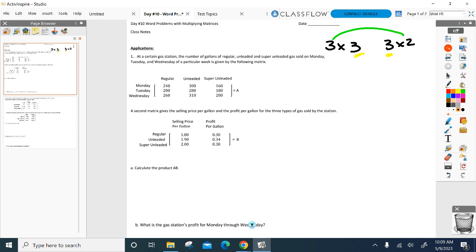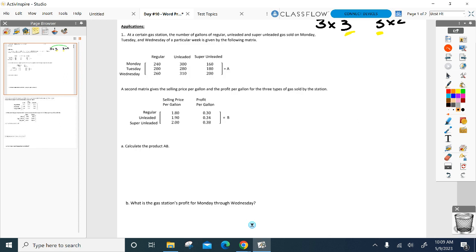I should have a three by two matrix here. I'll do two of them with you just to make sure we're good. Here we go, first spot: row one, column one. Row first matrix, column second matrix. So here are the numbers I should be multiplying and adding together: 240 times $1.80, keep going, plus 300 times $1.90, plus 160 times 2.